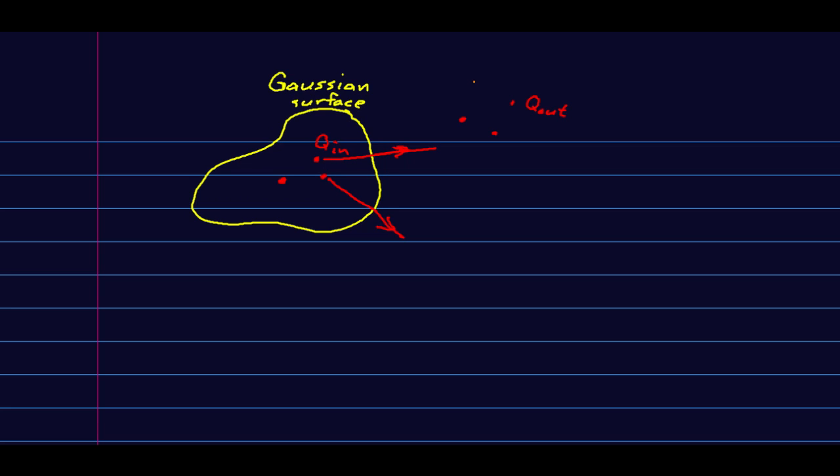But now let's think about the field lines coming from our charges outside the surface. Field lines from here will tend to pass into the surface at one point and out of the surface at another point. And what is guaranteed to happen is because the ones passing in lead to negative fluxes, if you think about how cosine theta works, and our area elements are defined to always point out.